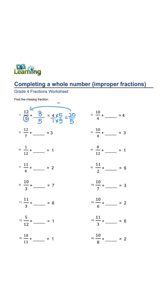3 over 1, denominator is 7. 3 times 7, 1 times 7 equals 21 over 7. 21 minus 12 is 9 over 7. 1 over 1,